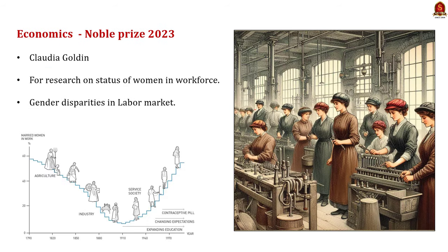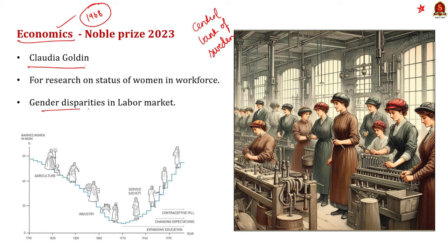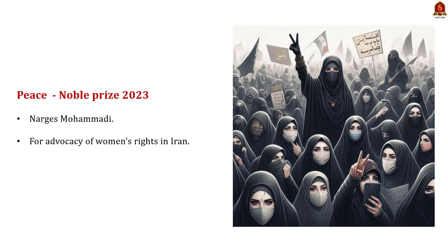The 2023 Nobel Prize in Economics was awarded to Claudia Goldin for her research on the gender gap in the labor market — specifically why women are paid less than men for the same job, focusing on gender disparities in the labor market. Note that this prize was created only in 1968, is not an original Nobel Prize, and was awarded by the central bank of Sweden. The 2023 Nobel Peace Prize was awarded to Narges Mohammadi from Iran, a human rights activist, for her advocacy of women's rights in Iran.